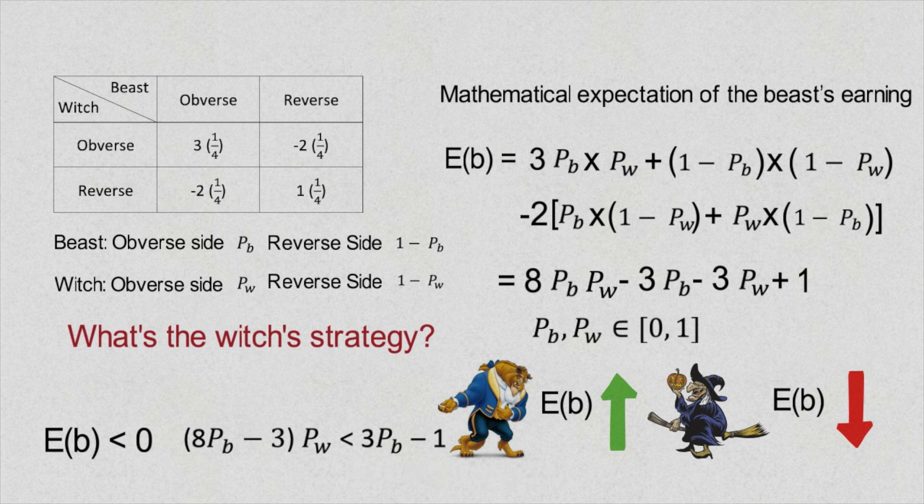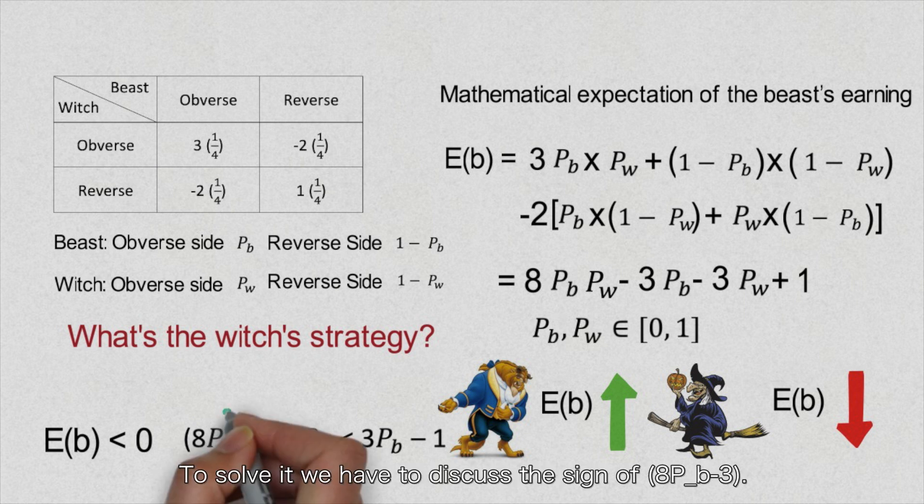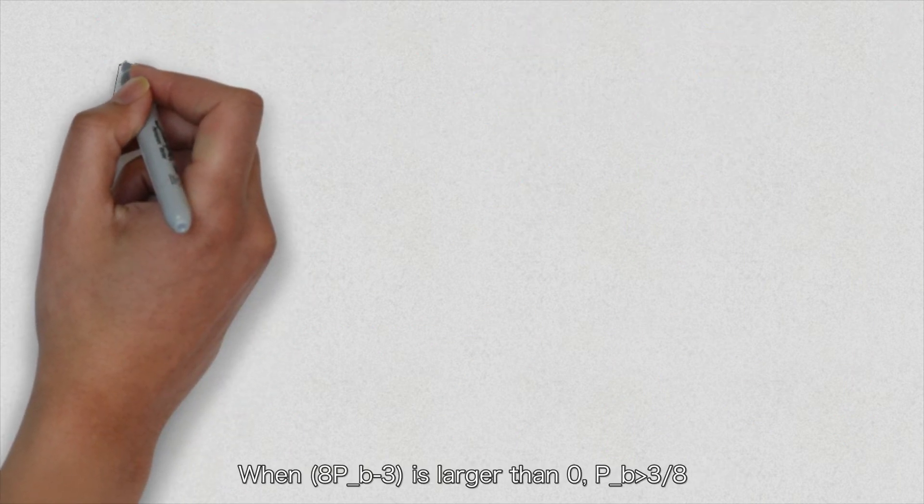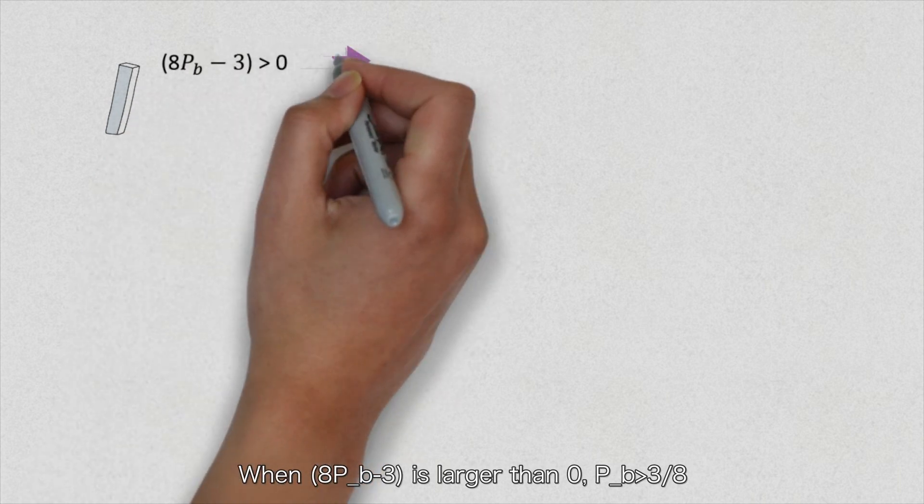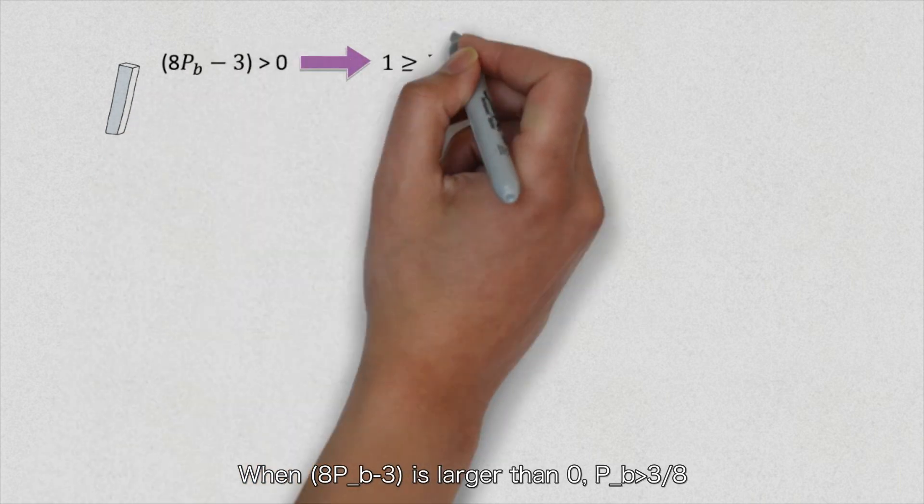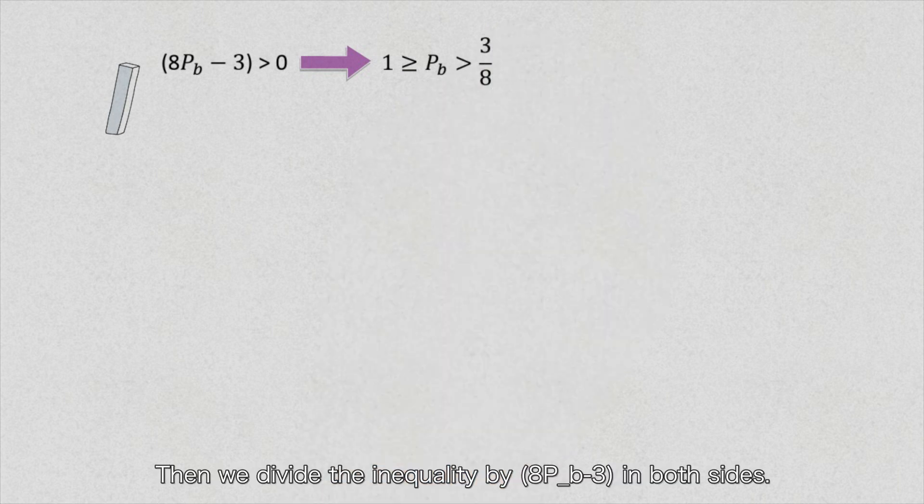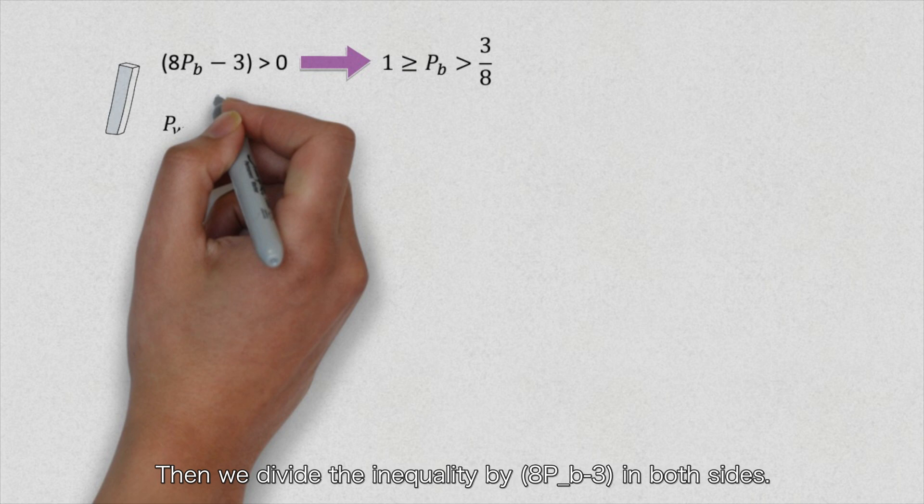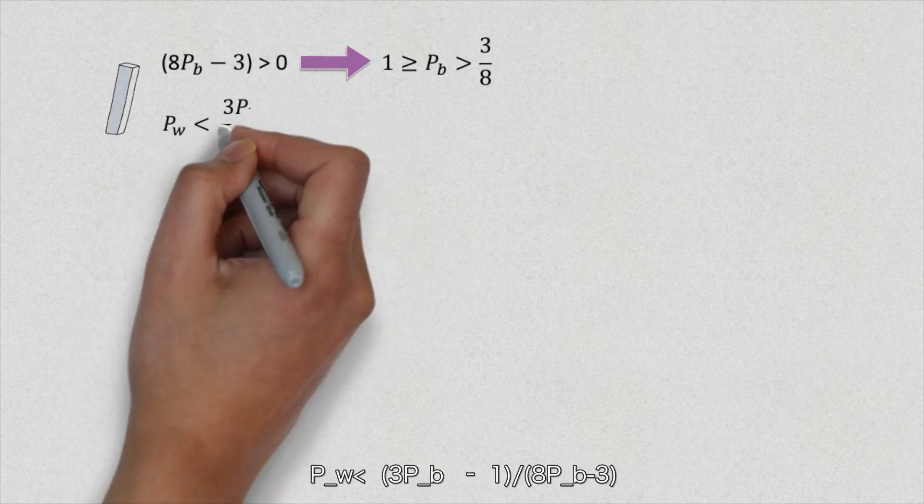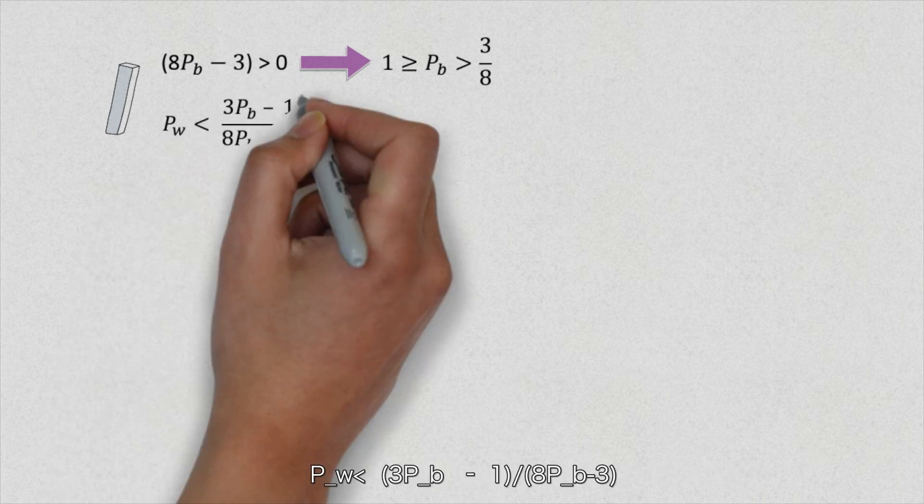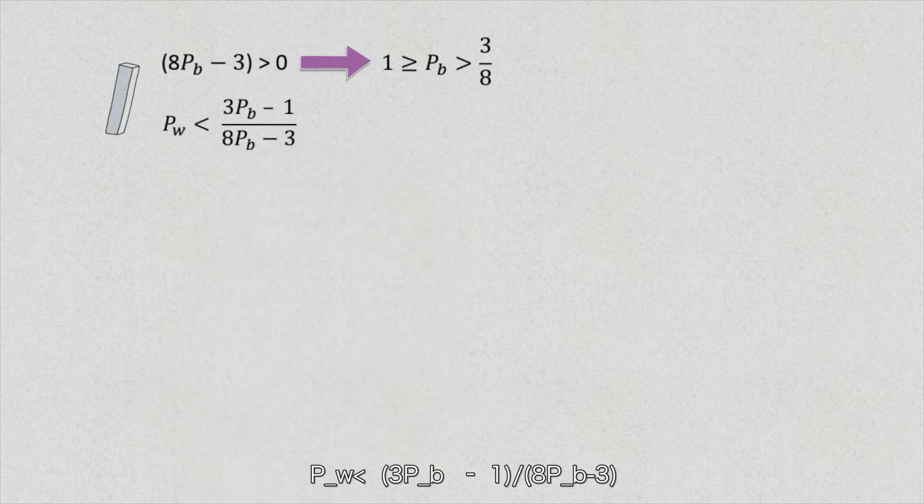This is an inequality. To solve it, we have to discuss the sign of 8P_b minus 3. When 8P_b minus 3 is larger than 0, we have P_b larger than 3 over 8. Then we divide the inequality by 8P_b minus 3 on both sides. P_w is less than 3P_b minus 1 over 8P_b minus 3. That means as long as P_w is less than the minimum of 3P_b minus 1 over 8P_b minus 3.